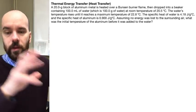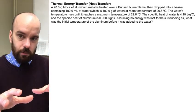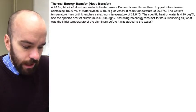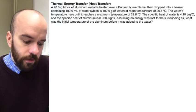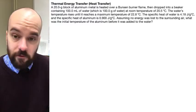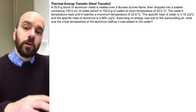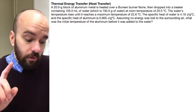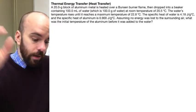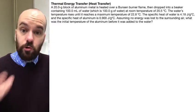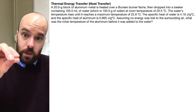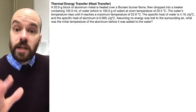So that we'll call a calorimetry problem. This is a thermal energy transfer problem. So let's read the problem and jump in and solve this. It says a 20 gram block of aluminum metal is heated over a Bunsen burner flame, then dropped into a beaker containing 100 milliliters of water at room temperature of 20.5 degrees Celsius. We've got a hot thing — the aluminum metal that we've heated up over the burner — dropped into a beaker containing water at room temperature, so that's the cold substance, and they're going to reach some temperature between those two.